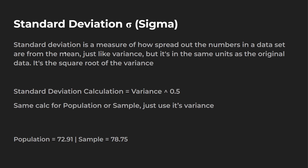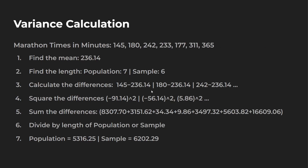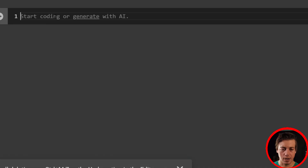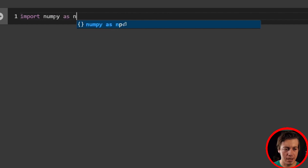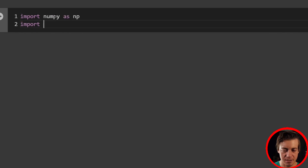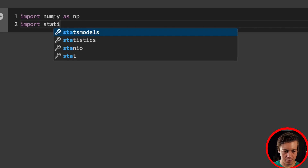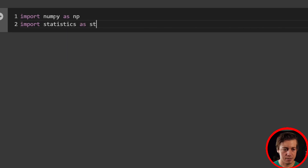There are a lot of steps, but I'm going to show you how to do this much easier in Python. We'll start with a manual calculation first, then go into essentially one line of code that automates all of this. Let's get started by bringing in our imports. You only need two: import numpy as np, and import statistics as st.